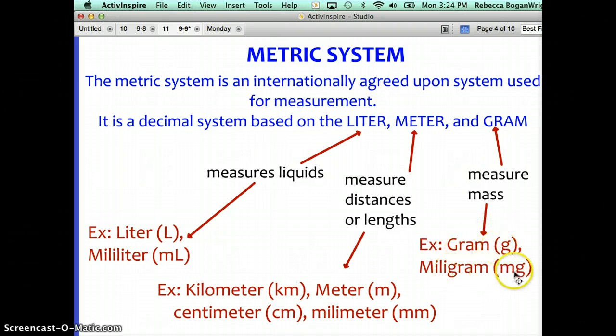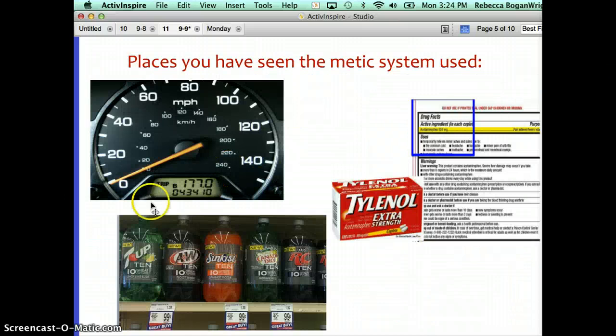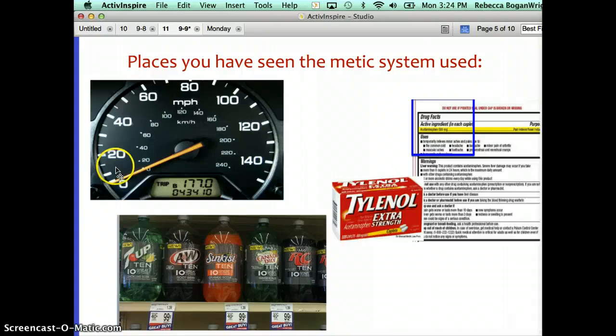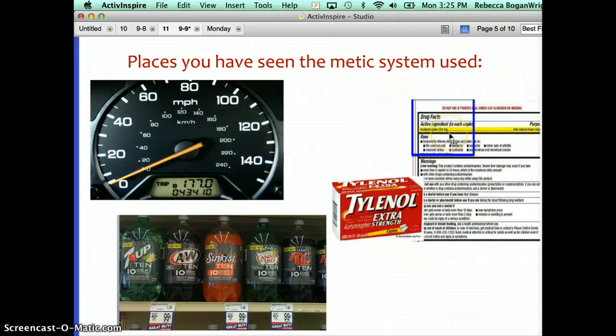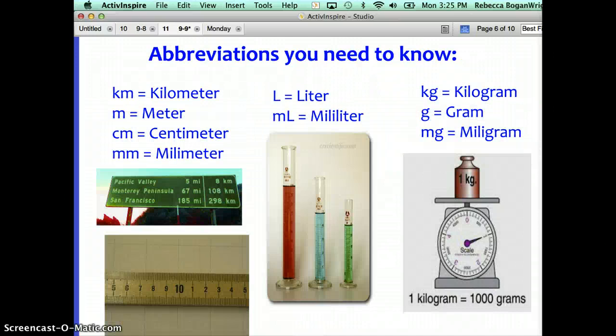These are some places where you probably have seen the metric system used. When you drive in your car, usually the speedometer on the outside reads miles per hour, but on the inside you'll see km/H, which means it's measuring how fast you are going in kilometers per hour instead of miles per hour. When you go to the grocery store, you don't usually buy a gallon of soda, usually you buy a liter of soda. And when you buy any kind of medication, if you look on the back, it is usually measured in milligrams.